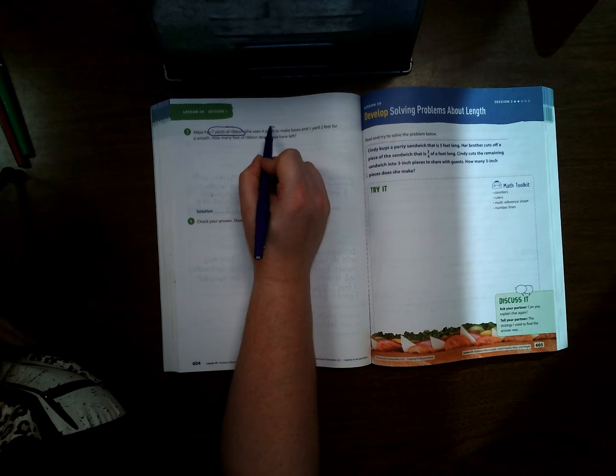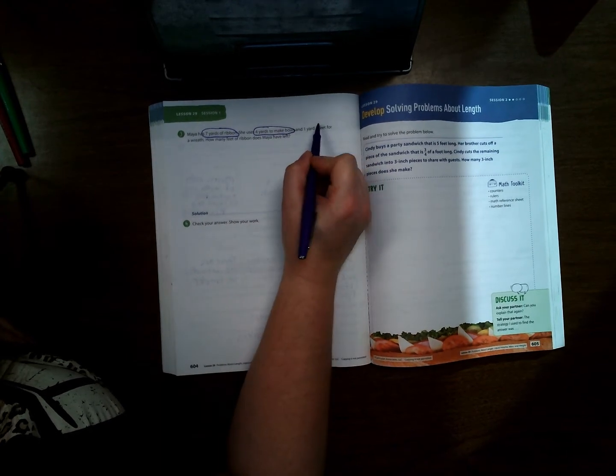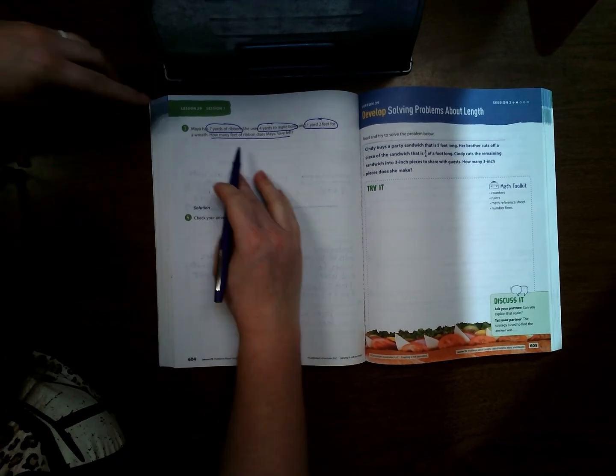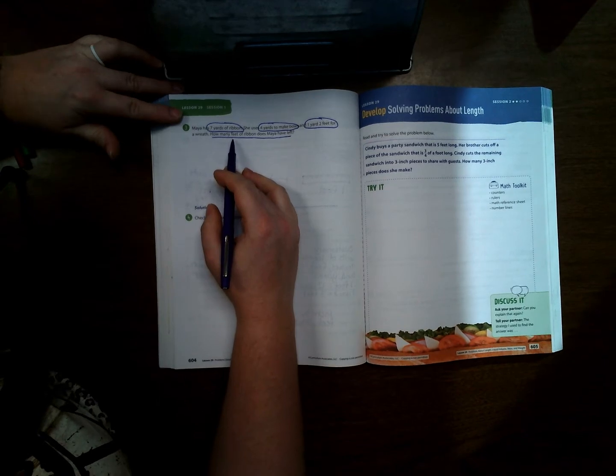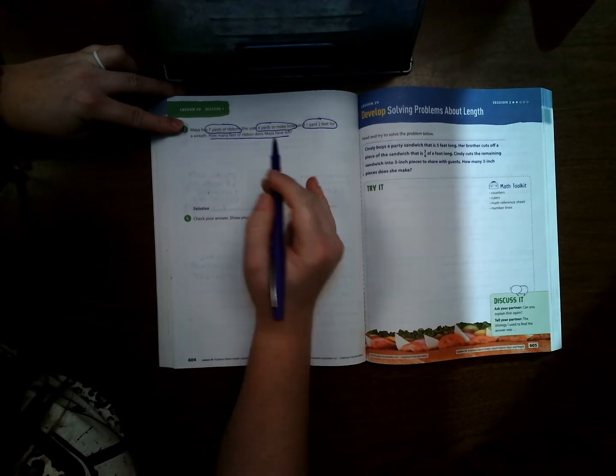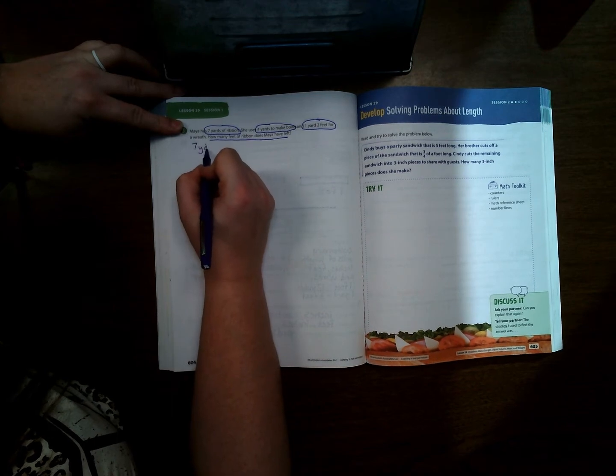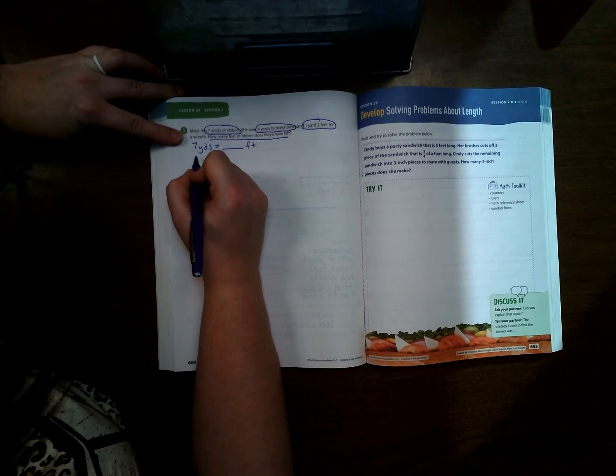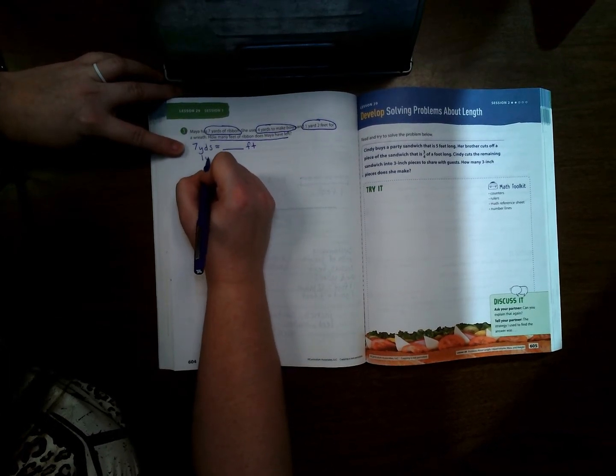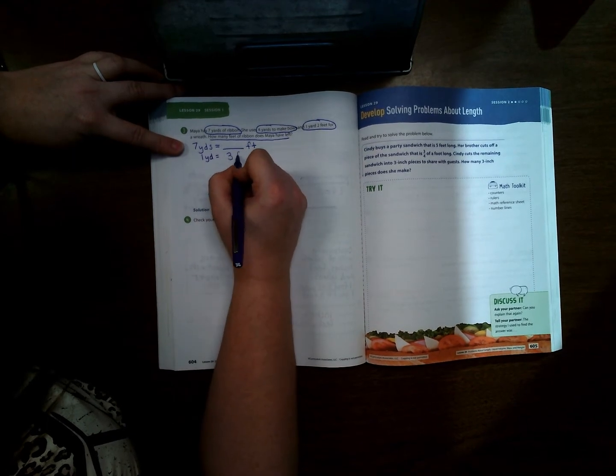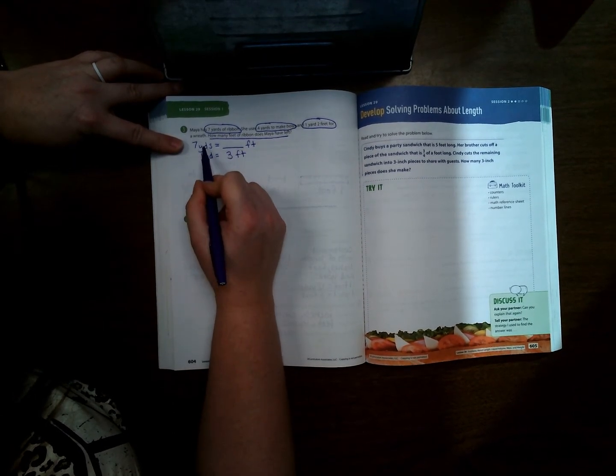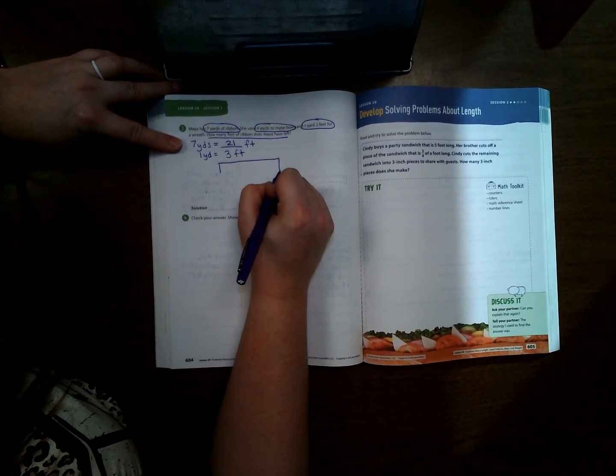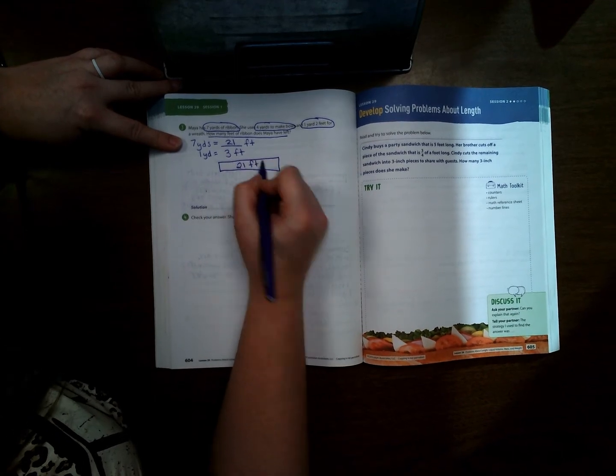All right, Maya has seven yards of ribbon. She uses four yards to make bows and one yard two feet for her wreath. How many feet of ribbon does Maya have left? So since we are using the smaller which is feet, that means we need to convert everything into feet. So seven yards equals how many feet? We know that one yard equals three feet, so that means we're going to multiply three times seven, which is 21 feet. So we're beginning with 21 feet.